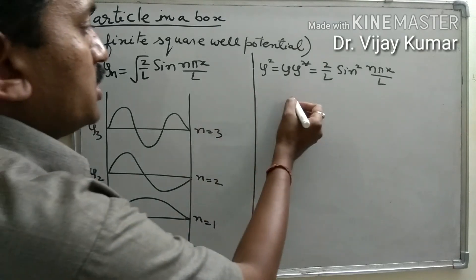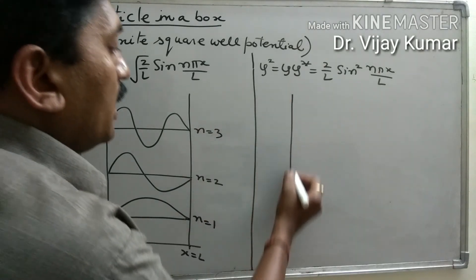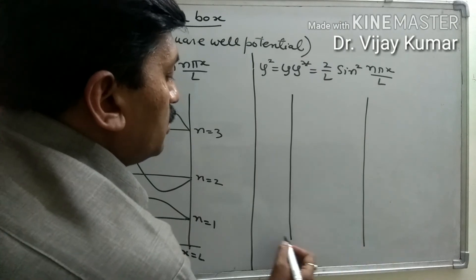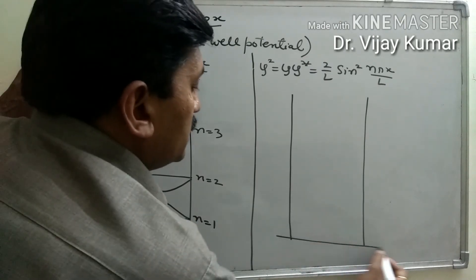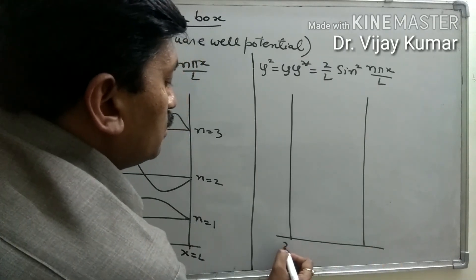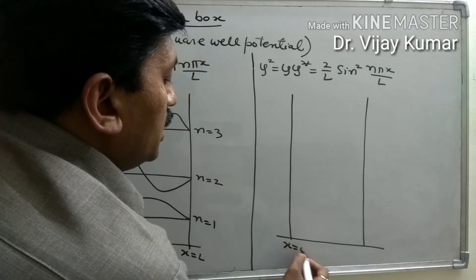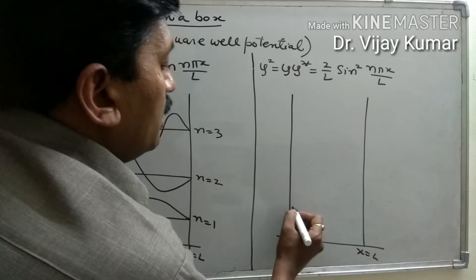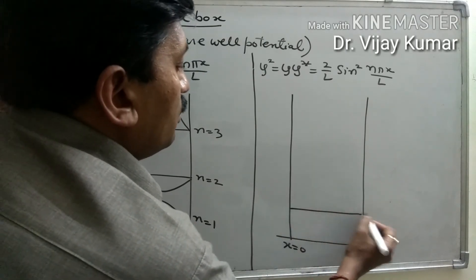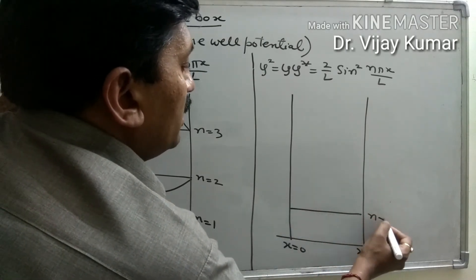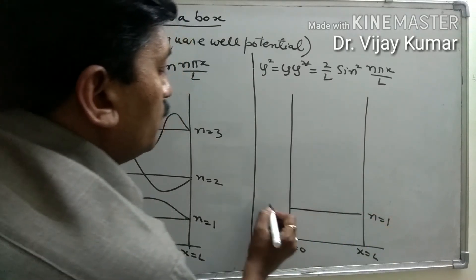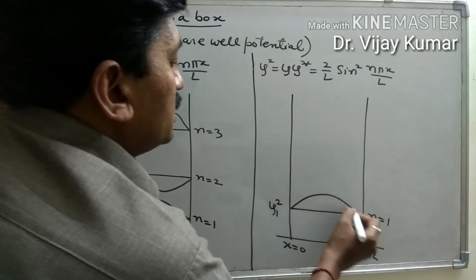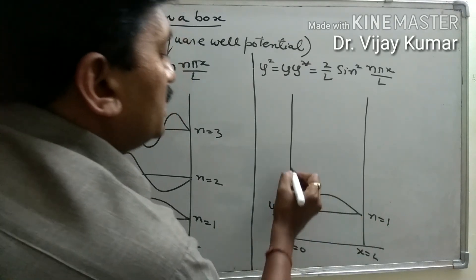The probability density is always positive, and we can represent it inside the box. These are the walls of the box at x = 0 and x = L. At the first level, n = 1, ψ₁² is represented like this.